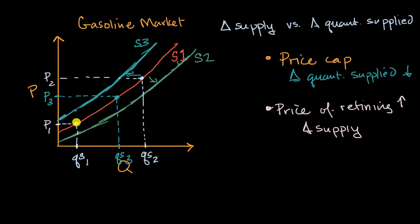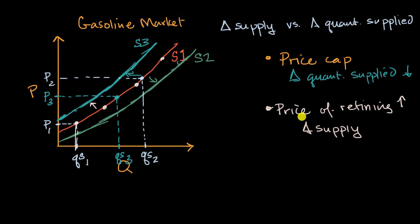At a given quantity, suppliers would now want to charge a higher price. And this doesn't apply just to one point — it applies to this point of the curve, this point of the curve, all points of the curve. They'd want to charge a higher price to make up for the fact that refining is now more expensive. So this would be a shift upward and to the left. Equivalently, at a given price, suppliers would want to provide less quantity because they need to cover higher refining costs — a shift to the left.